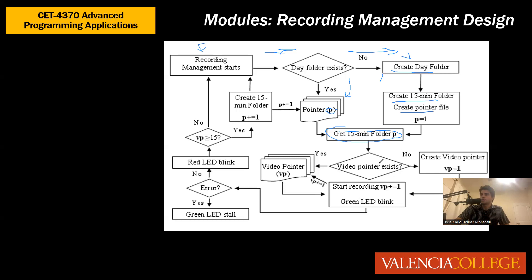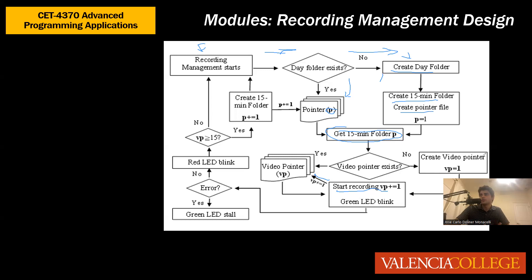Next, it checks if a video pointer exists. A video pointer is a file that tracks how many recordings have been made into the current 15-minute folder. For example, if three videos have been recorded, the video pointer value is 3. If a video pointer exists, we access it, retrieve the value, start a recording, and then add 1 to that pointer file. If it doesn't exist, it creates one and sets it equal to 1.